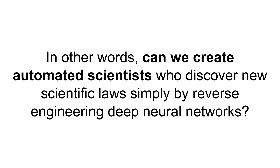My thesis is really this: if we can create automated scientists who discover new scientific laws simply by reverse engineering deep neural networks, imagine how simple it would be to publish new papers and discover new laws — simply by collecting tons and tons of data, putting it through a deep neural network training algorithm, and then finding out what different layers of that network are doing. That's how we could start getting new insights.